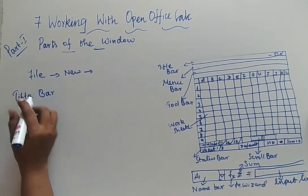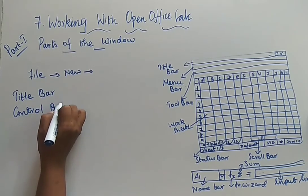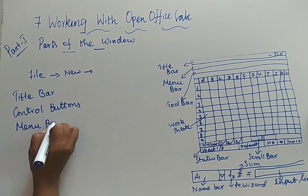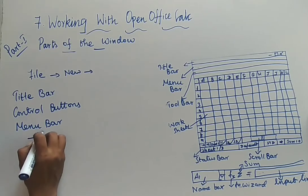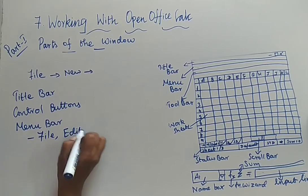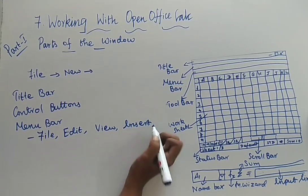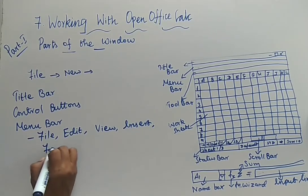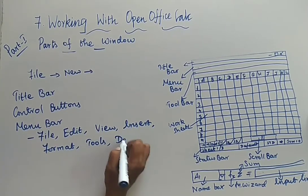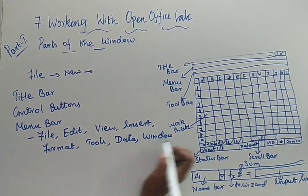Next we finished the control buttons. And next we finished the menu bar. Under the menu bar, the menus we have discussed are: File, Edit, View, Insert, Format, Tools, Data, Window, and the last one — Help.